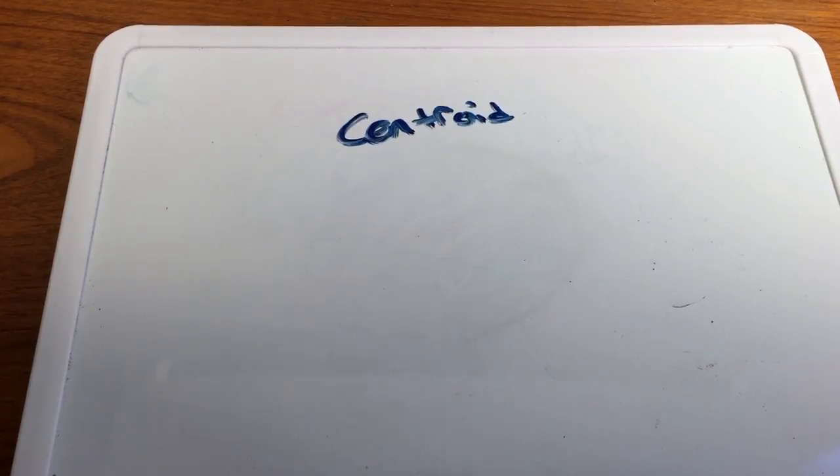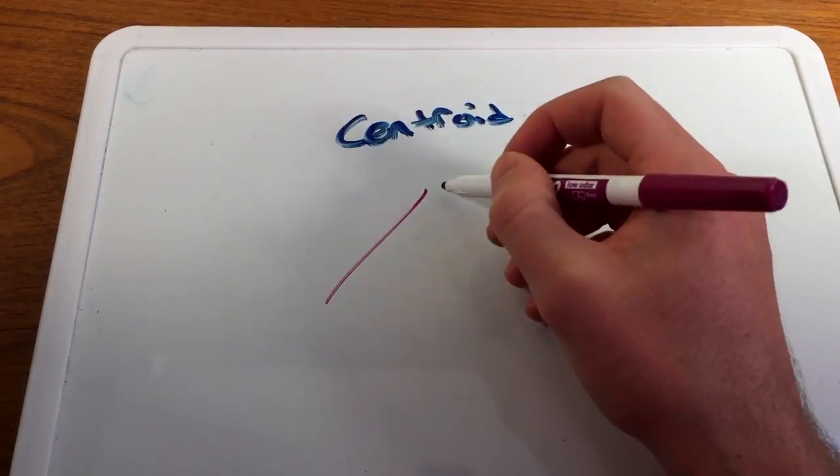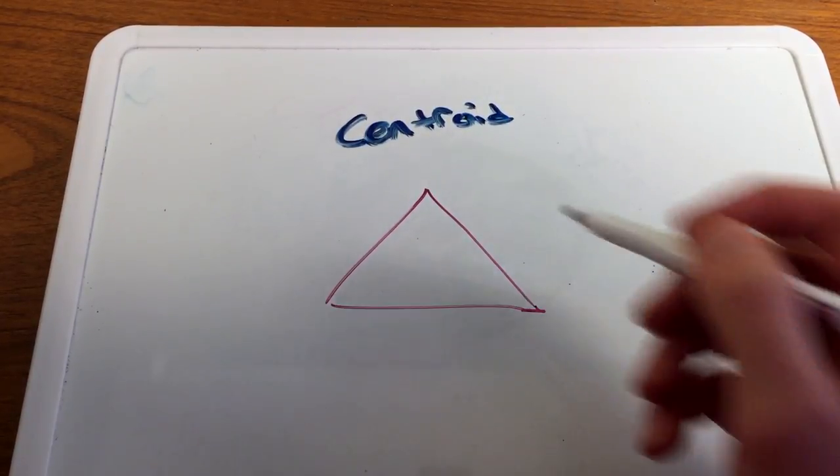And so first we're going to talk about what is the median of a triangle. Well the median of a triangle is, first let's just draw a triangle here.